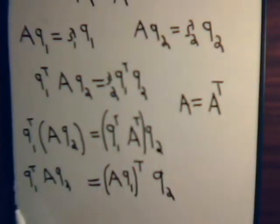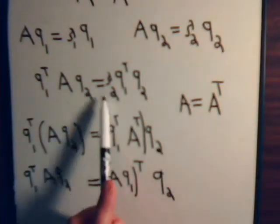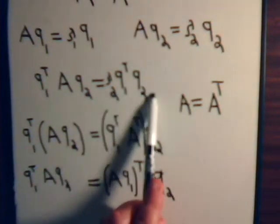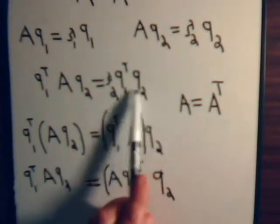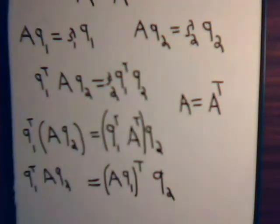We have this equation. Now, let's see what else we have. Up on the top, for Q transpose AQ2, we also had this expression right here. So what do we have so far?